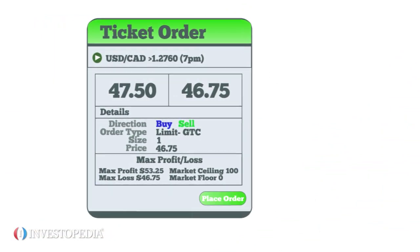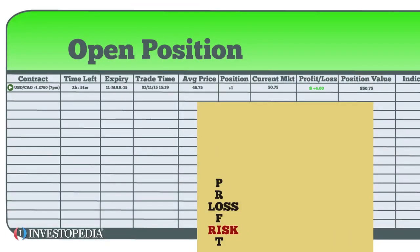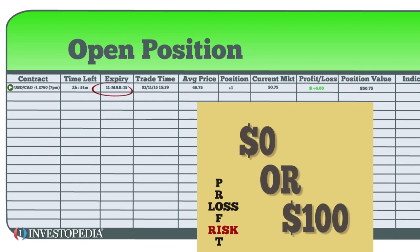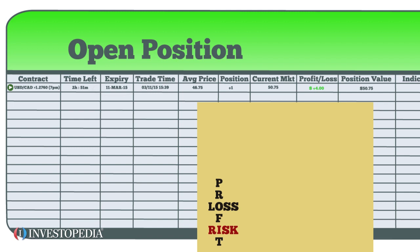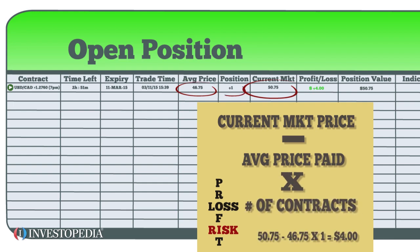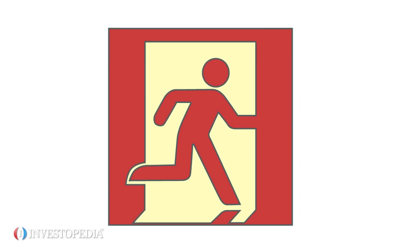The price of a binary option will always be between zero and 100, so at expiration it will be worth either zero or 100. Your profit or loss at any point is the current market price minus the average purchase price, multiplied by the number of contracts in your position.